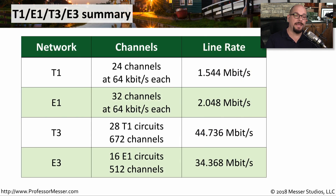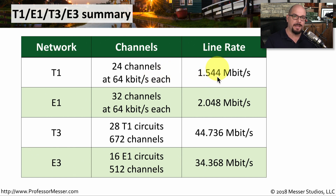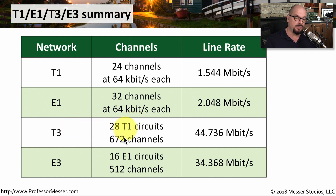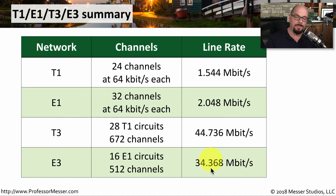Here's a summary of the T1, E1, T3, and E3 wide area networks. The T1 is 24 channels at 64 kilobits per second each, providing a line rate of 1.544 megabits per second. The E1 is 32 channels, also at 64 kilobits per second each, giving a total line rate of 2.048 megabits per second. Moving up, the T3 is 28 T1 circuits, or 672 channels, providing a total line rate of 44.736 megabits per second. The E3 is 16 E1 circuits, or 512 total channels, for a 34.368 megabits per second line rate.